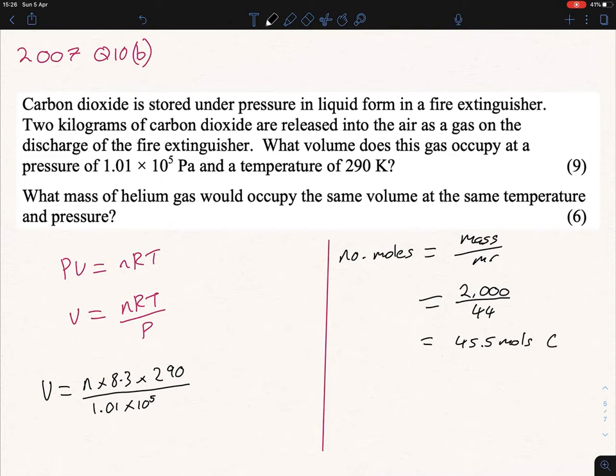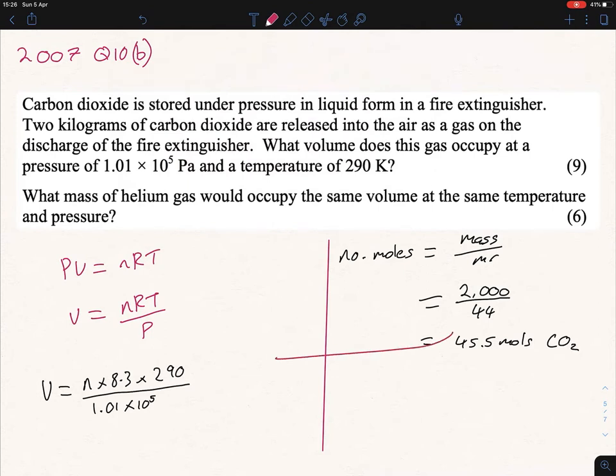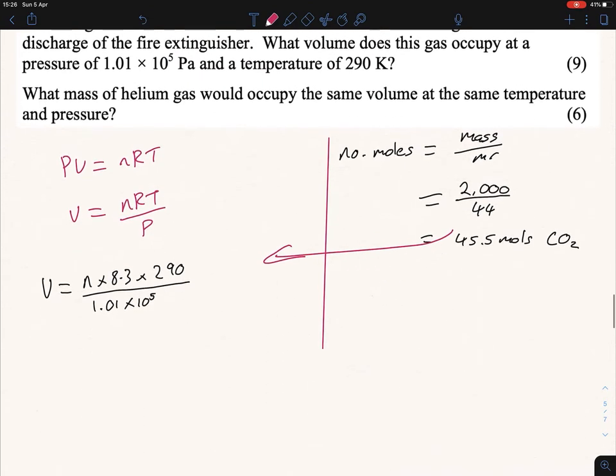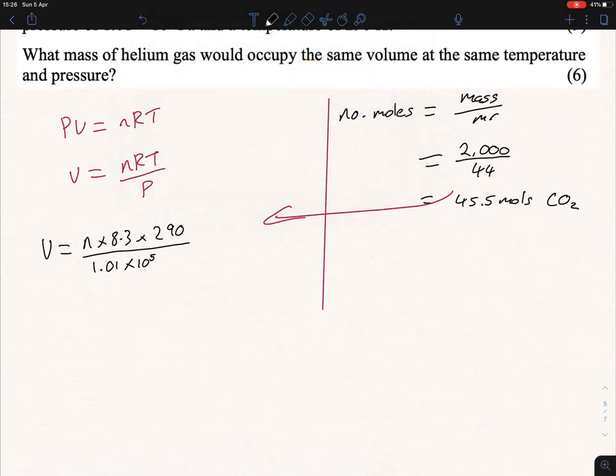All I'm going to do now is plug that into the formula and get my answer. My volume equals 45.5 times 8.3 times 290 all over 1.01 times 10 to the power of 5.